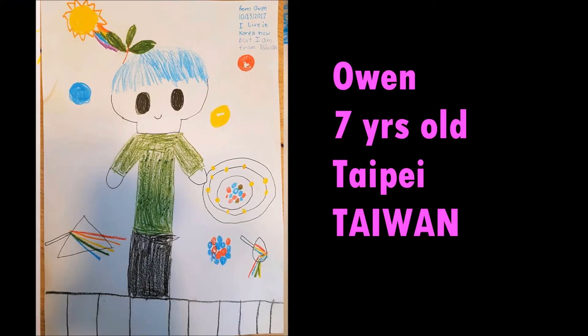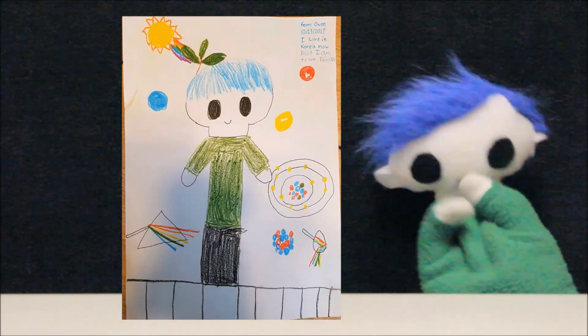This awesome drawing is from Owen. He is seven years old and lives in Taipei, Taiwan. Very nice drawing, Owen!